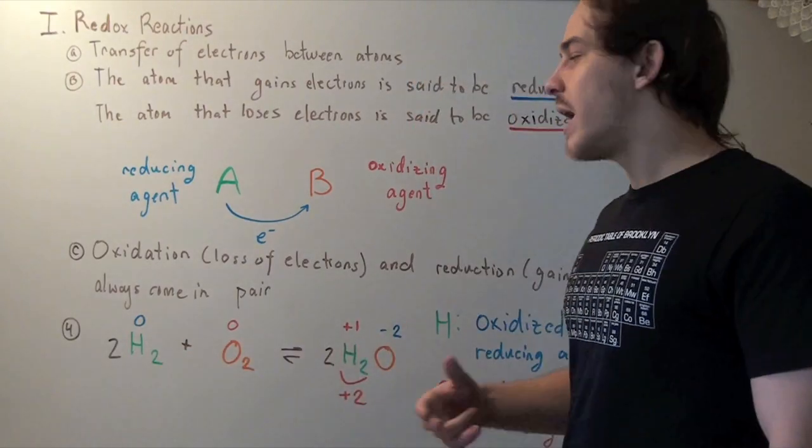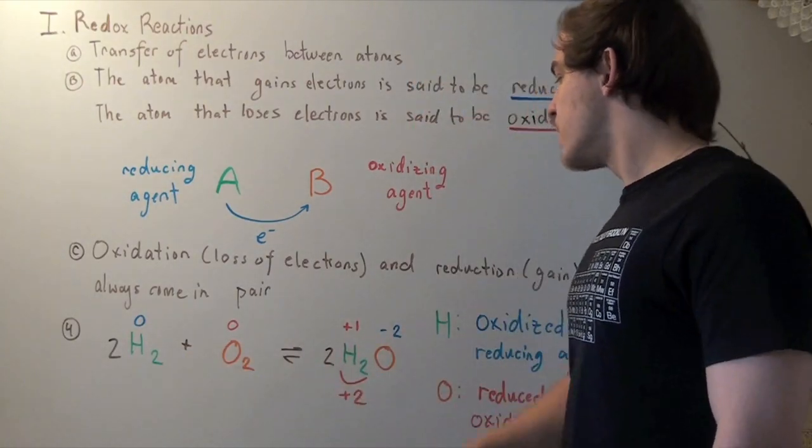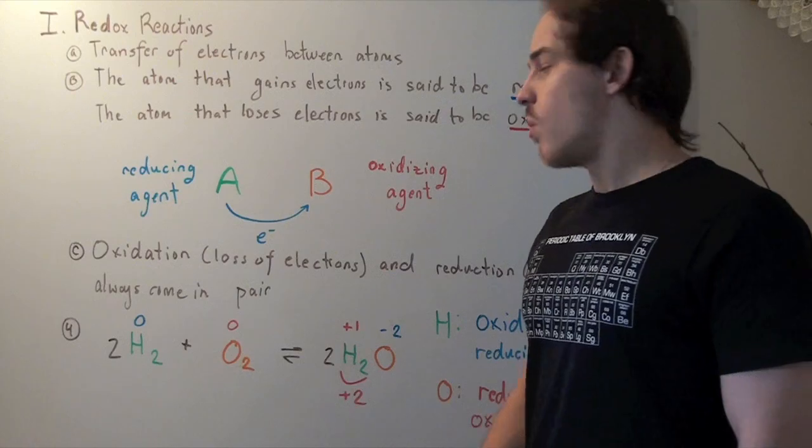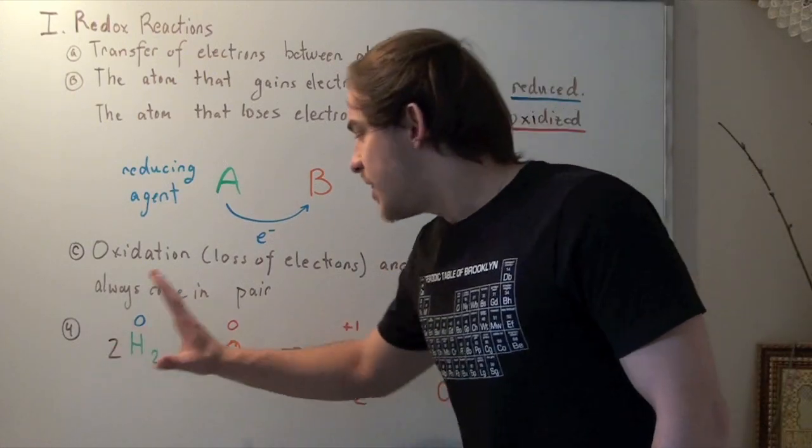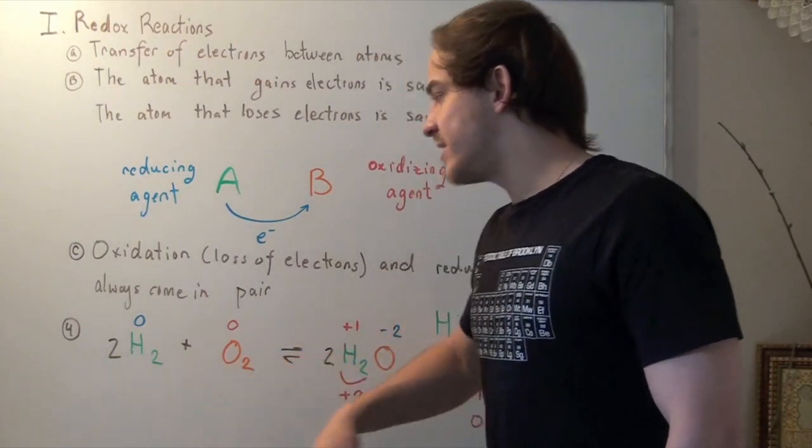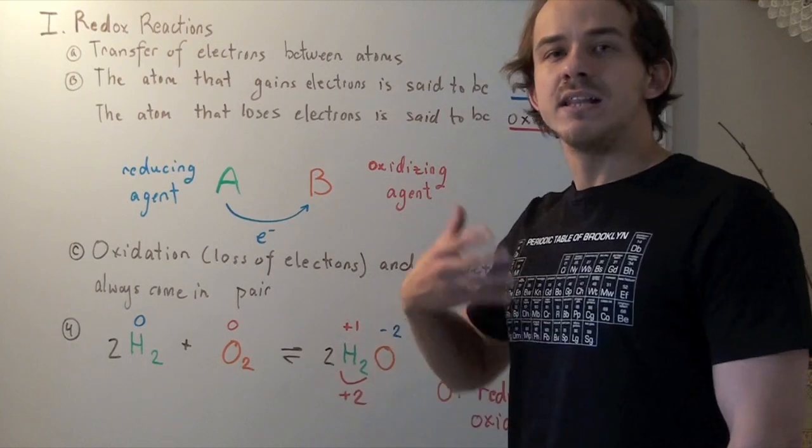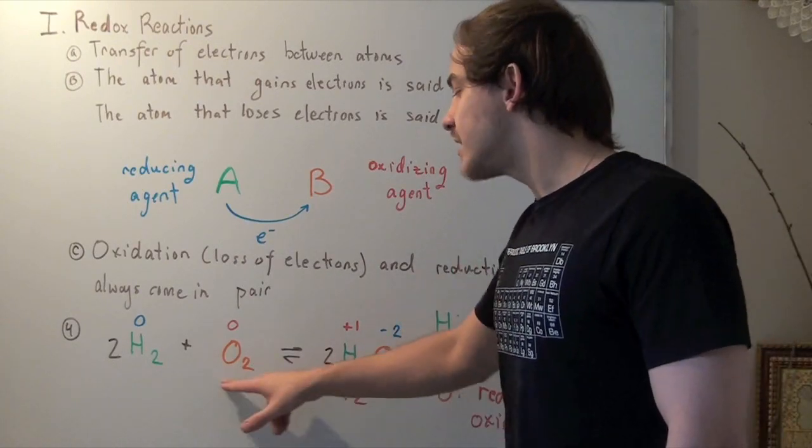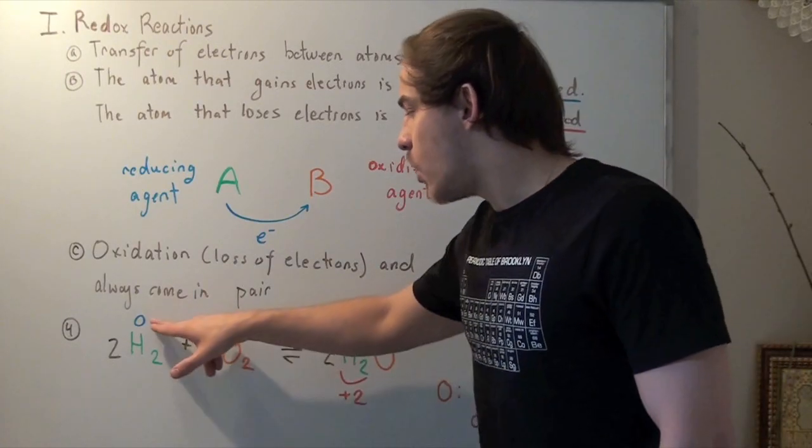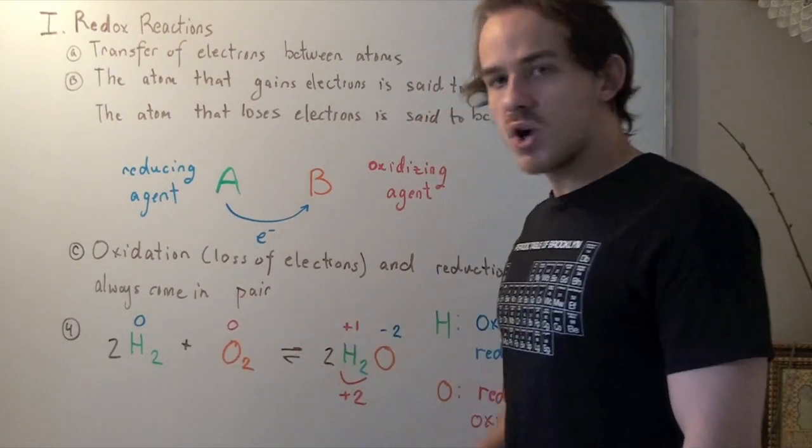Two H2 molecules combined with a single O2 molecule, forming two molecules of water. So on this side, our H2 is in its atomic state, it's in its elemental state, and so is oxygen. That means they both have a charge of zero.